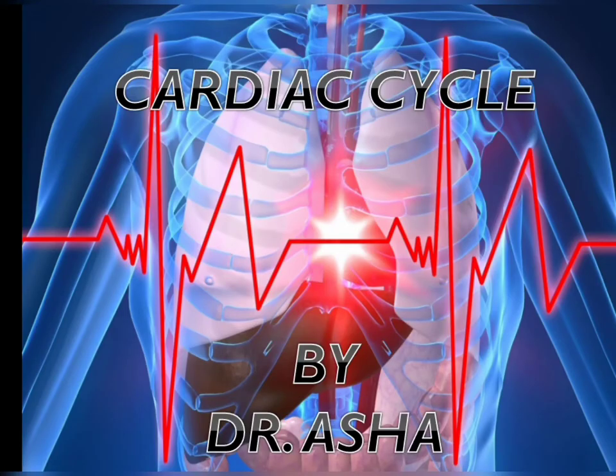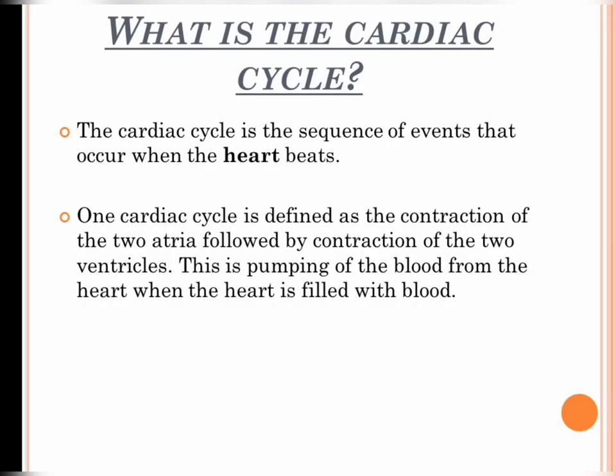Hello friends, today I'm starting the cardiac cycle. The cardiac cycle is a sequence of events that occurs when the heart beats. One cardiac cycle is defined as the contraction of the two atria followed by the contraction of the two ventricles, involving pumping of blood from the heart when it is filled with blood, or the sequence of changes in pressure and flow in heart chambers.